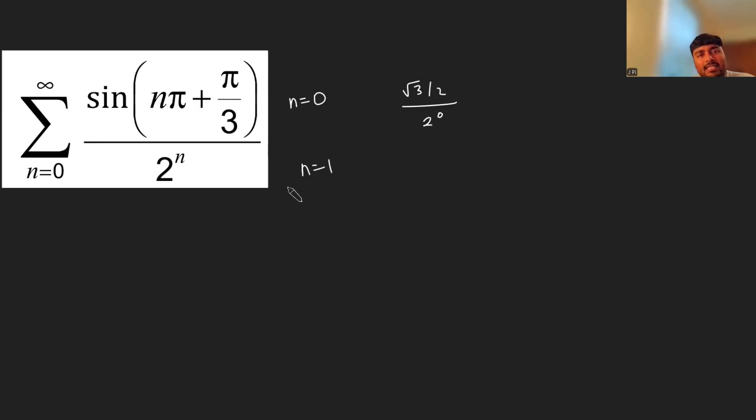What about when n equals 1? Well, I'm going to get sine of pi plus pi over 3, which is sine of 4 pi over 3. And sine of 4 pi over 3, you can work it out in a bunch of different ways, but that's going to be minus root 3 over 2 times 2 to the 1. I think the easiest way to see that is if I use a graph of sine. This is pi, so 4 pi over 3 is just pi plus pi over 3, somewhere there. You can kind of see that that part of the curve would be the same as the corresponding part when that bit's pi over 3, and we know that that's minus root 3 over 2.